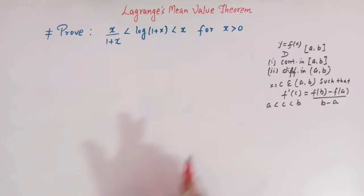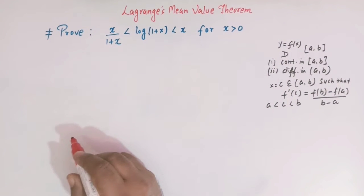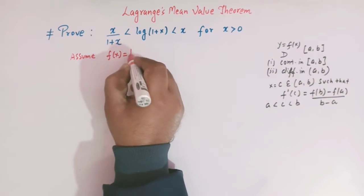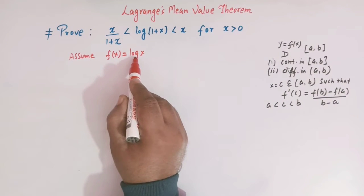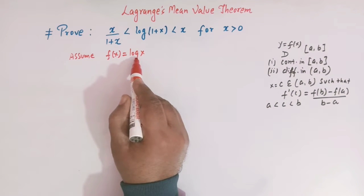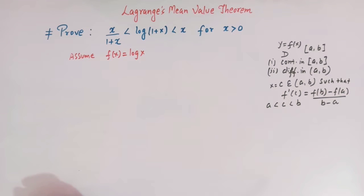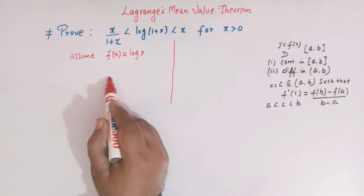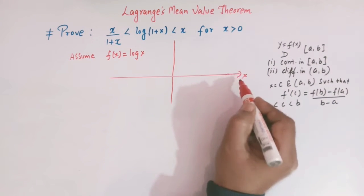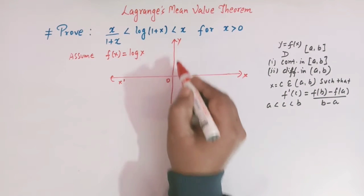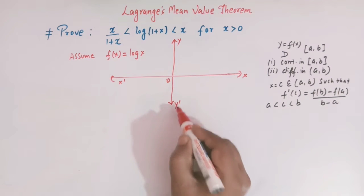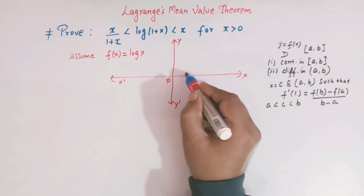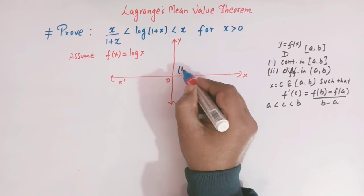To prove this inequality, let us assume a function f(x) = log(x), where the base of this log function is e — meaning we are dealing with the natural log. Let us quickly draw the graph of this function. Here we have the x-axis and the y-axis, and we know that the graph of log x looks like this.